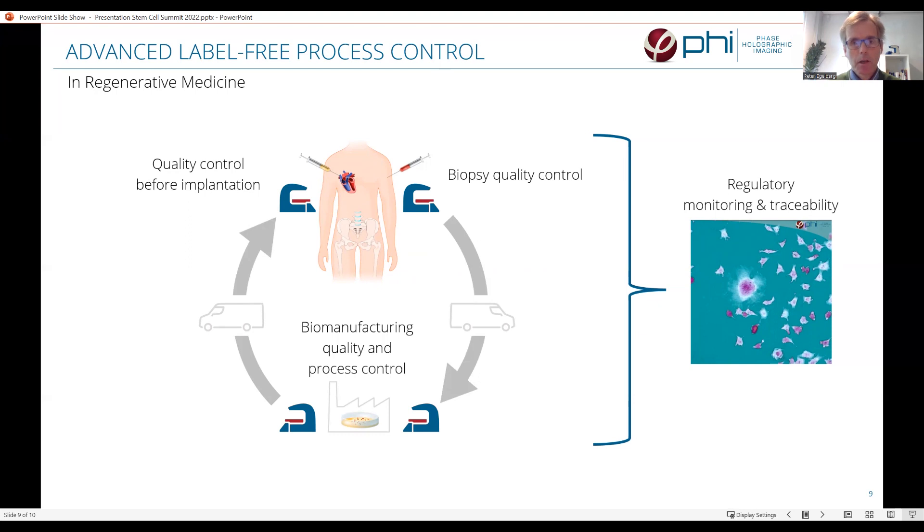We see three application areas for the type of quality control I described in the previous slide. Firstly, when the sample is extracted from the patient. Secondly, after the sample has been transported to the biomanufacturing for further processing. Not only initially, but through the process until the sample is ready to be shipped to the hospital for implantation in the patient, where it's called quality control at final time.